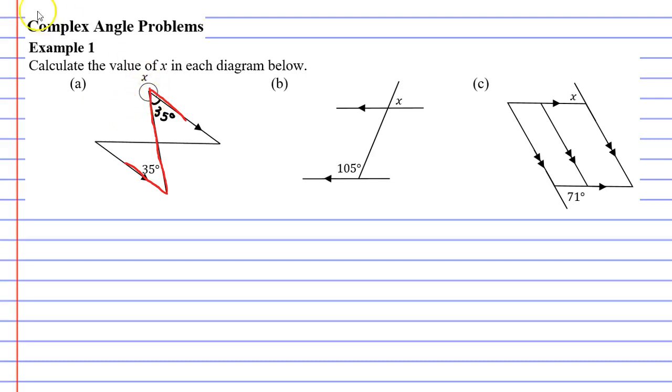Now, we actually have enough information to find x, because if you look closely, we're making a complete revolution. That tells me that the x and the 35 degree angle will add up to 360 degrees. So x will equal 360 minus 35, which gives me 325 degrees.